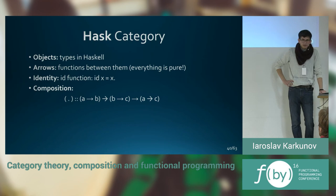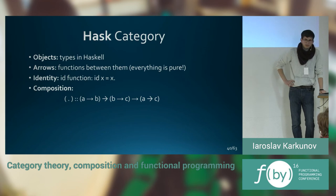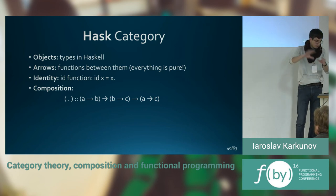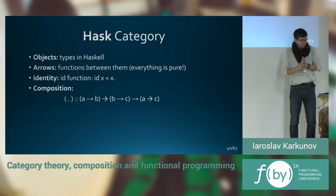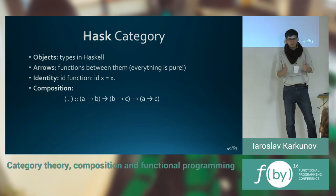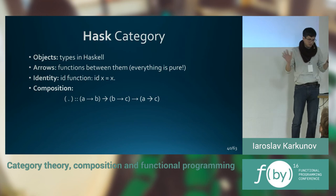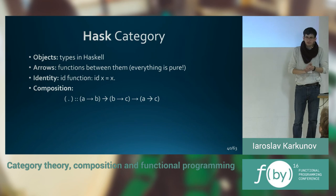If you take some programming language, for example, Haskell. We could build a Haskell category by using the types which we are using there. Objects are types, and arrows are just pure functions between them. Identity is just an identity function in Haskell. The same like in set, X equals X. And composition is function composition.